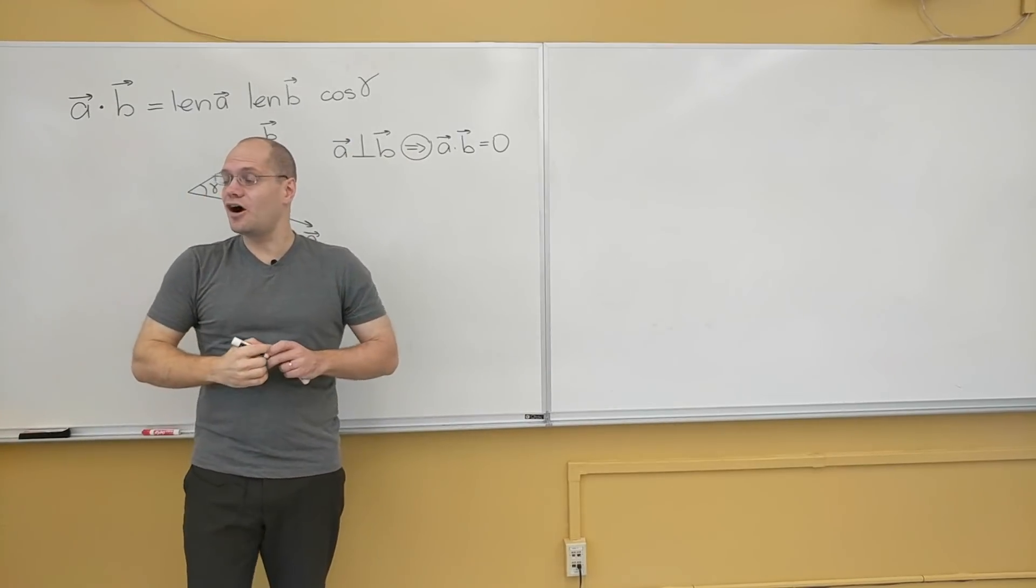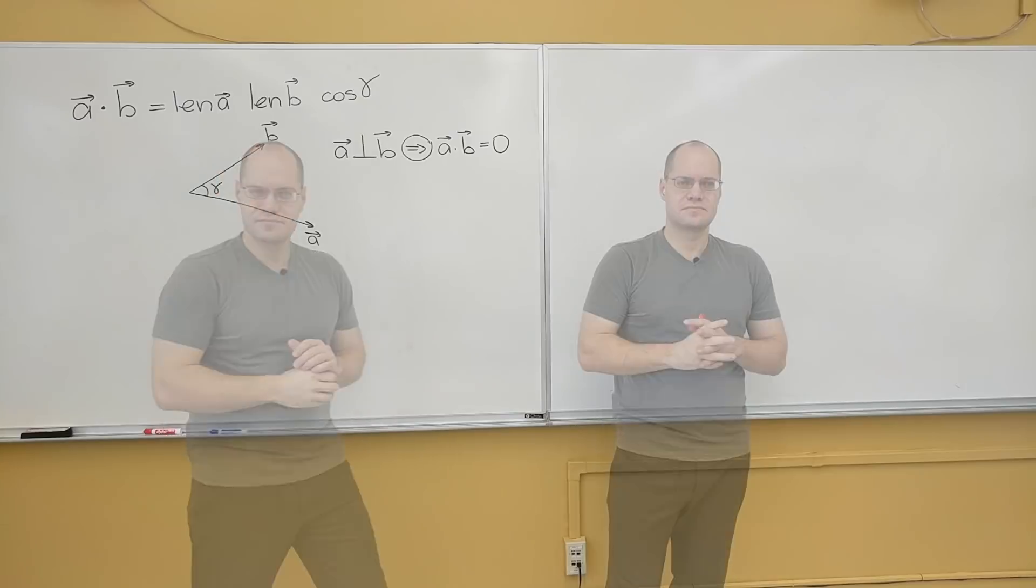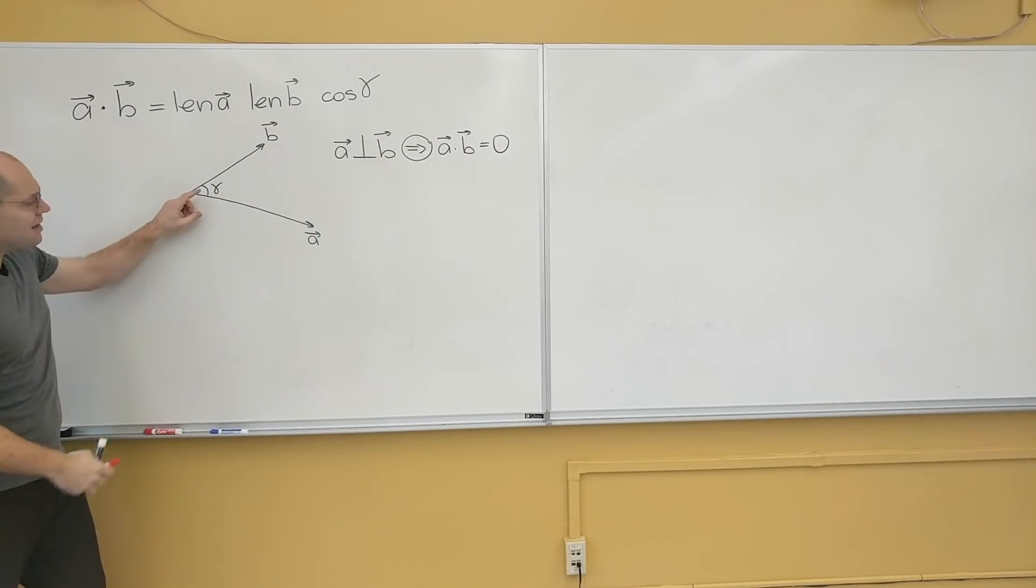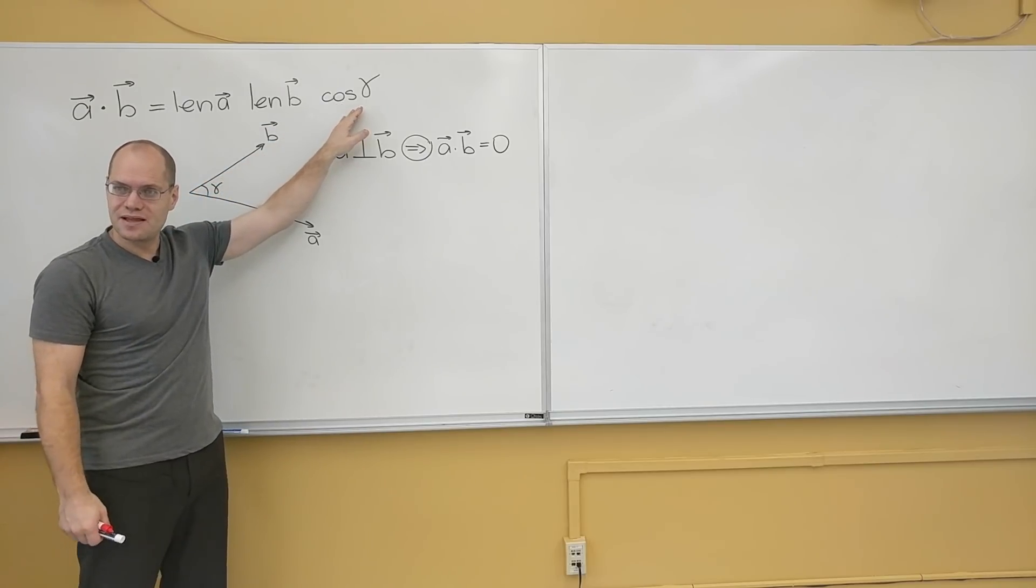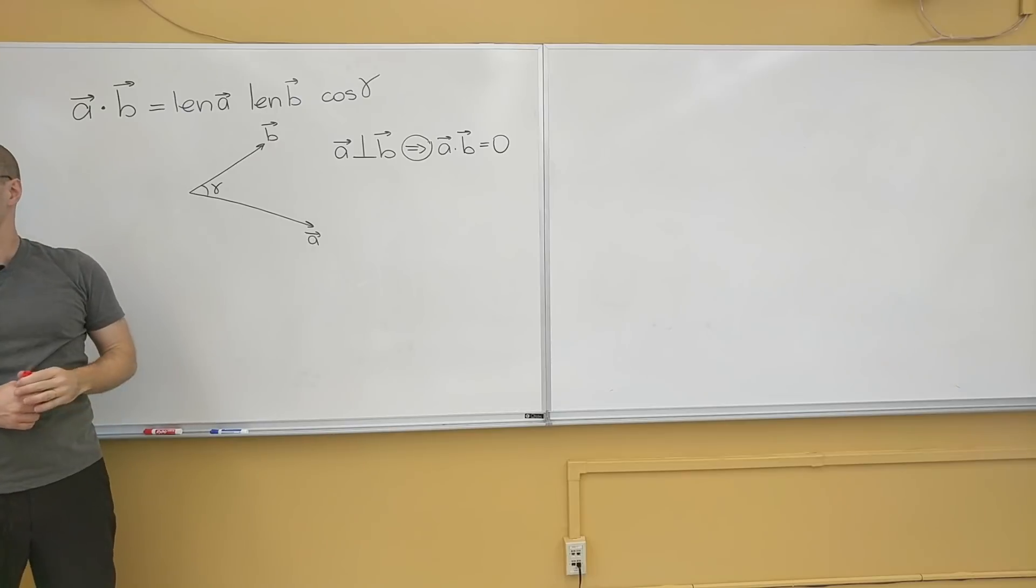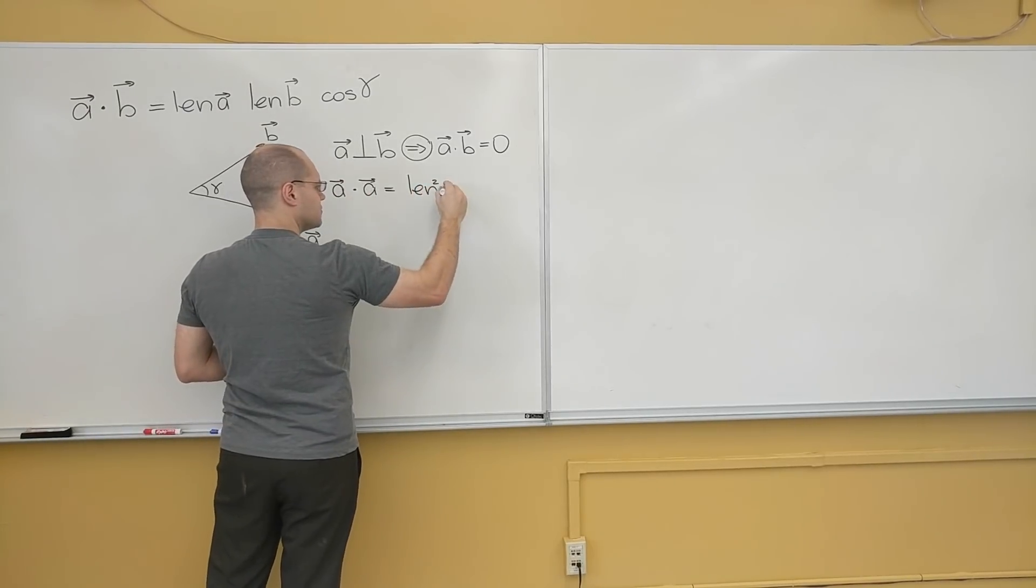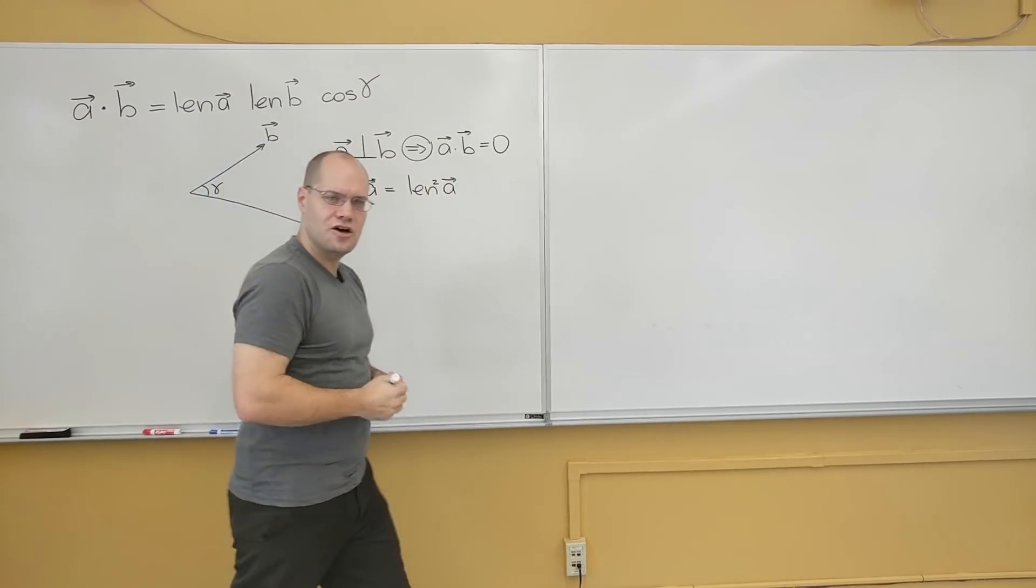What if a and b are the same vector? If a and b are the same vector, then the angle gamma between the two vectors is zero. Its cosine is one. And so what we have is length squared. The length squared.